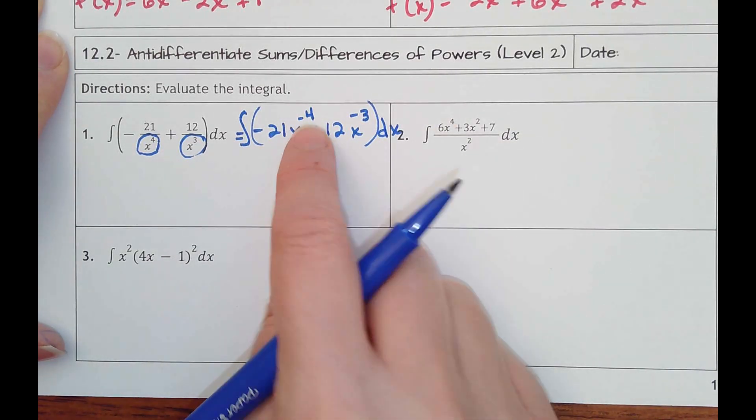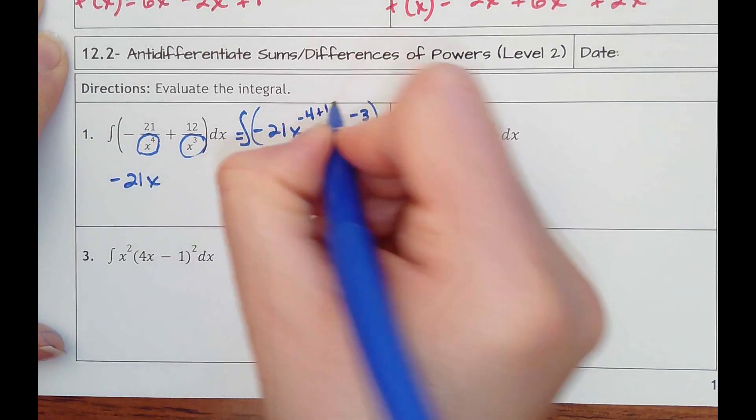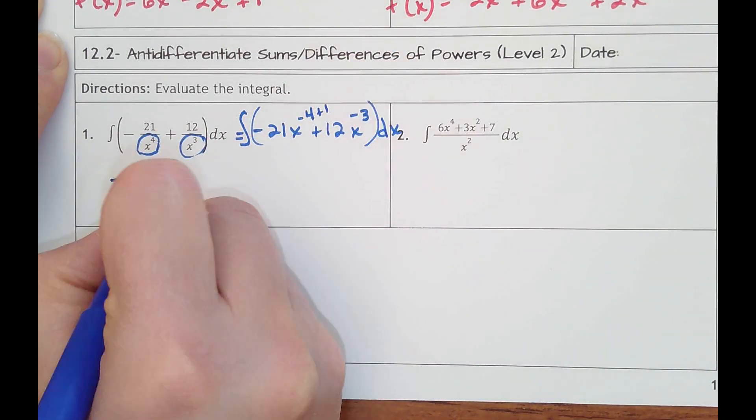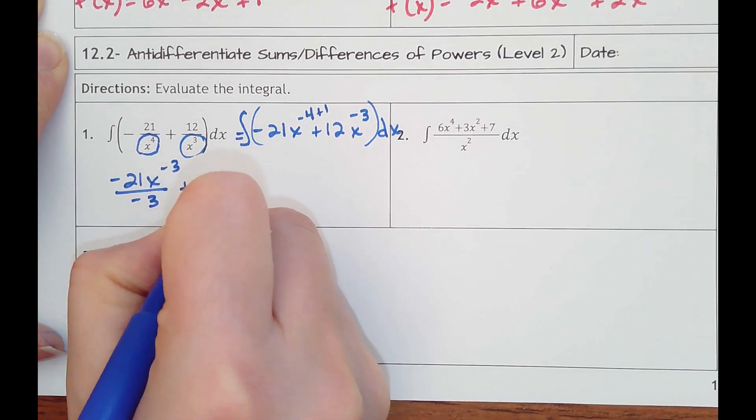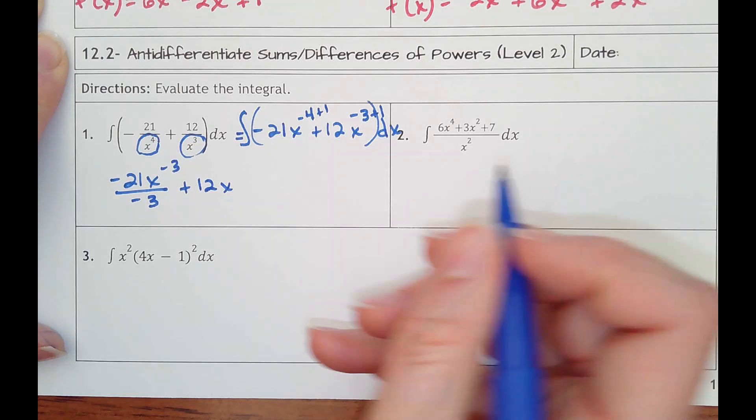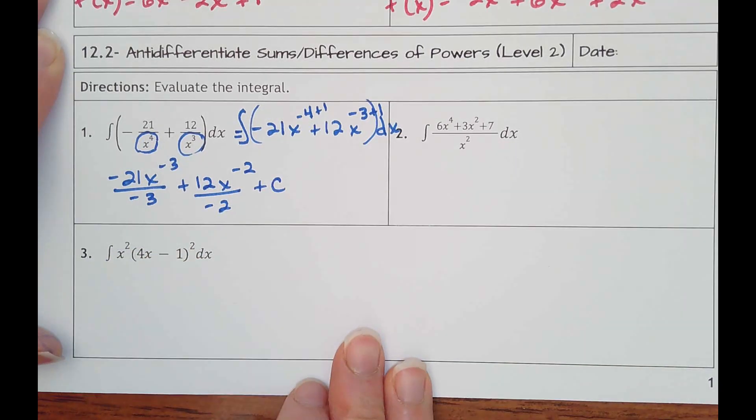So I want to figure out what was it to begin with. So then I would just go ahead and say, okay, I'm going to add 1 to the power. Negative 4 plus 1 would be x to the negative 3rd, divide by negative 3. Plus 12x, add 1 to negative 3, that would be negative 2, divided by negative 2, plus my constant.